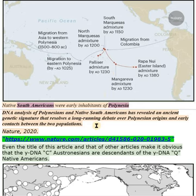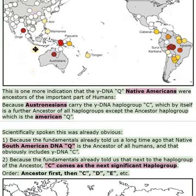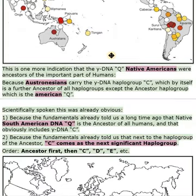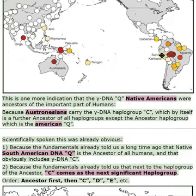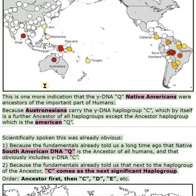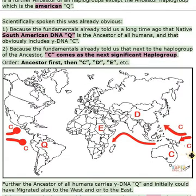Even the title of these articles makes it obvious that the Y-DNA-C Austronesians are descendants of the Y-DNA-Q Native Americans. This is one more indication that the Y-DNA-Q Native Americans were ancestors of an important part of humans, because Austronesians carry the Y-DNA haplogroup C, which by itself is a further ancestor of all haplogroups except the ancestor haplogroup, which is the American Q.